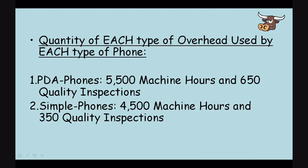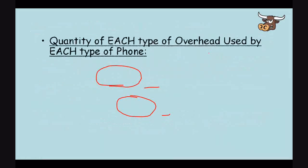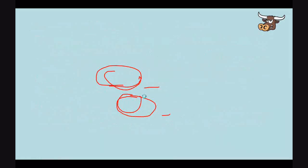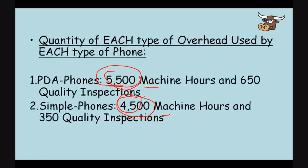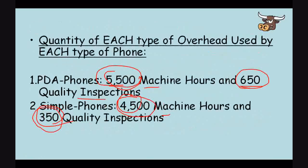Before we move on, I'd like to point something out. 5,500 machine hours plus 4,500 machine hours equals the total of 10,000 machine hours from the previous slide. And 650 quality inspections for PDA phones plus 350 inspections for simple phones equals 1,000 inspections all in all. So you'll notice that in the given information, it all balances out.